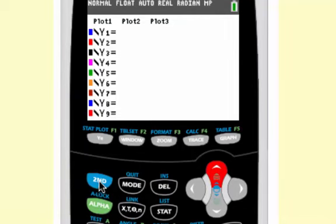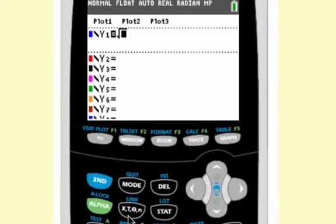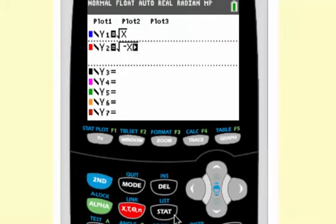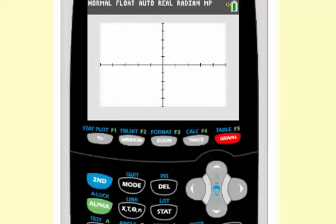So, the parent function is y1 equals the square root of x. For y2, square root of negative x plus 4. Now, we'll graph those and take a look.